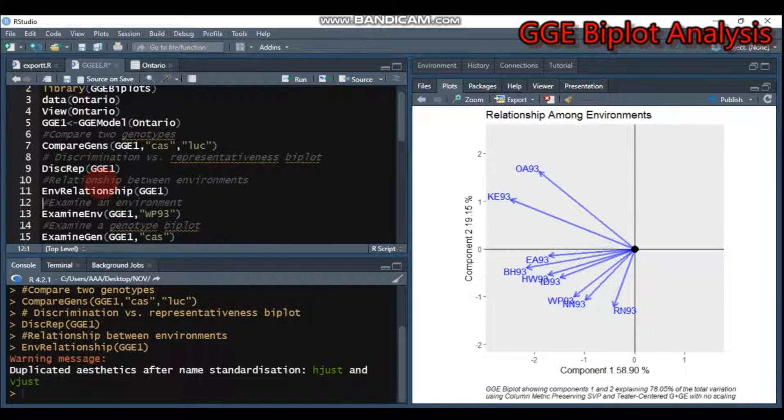If you want to examine the environments, you have to specify which environment. In this case, I selected WP93. The function that helps us examine an environment is examine.env. Write the model, then write the environment under quotation. Type this and send to R Studio, and you will get this biplot.